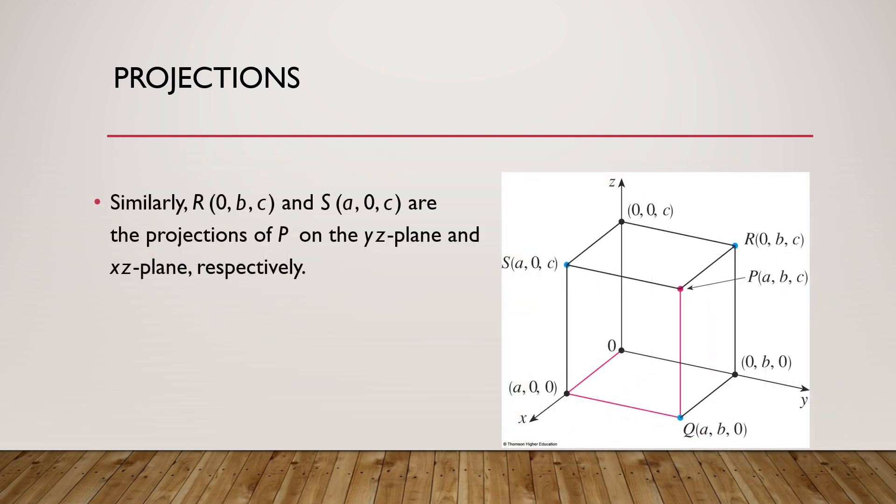We can draw the projection of point P on y-z plane, that is, the point R, where x-axis is 0, and y-axis is B, and z-axis is C. This is the projection of P along y-z axis. We can have the projection of P along x-z axis, that is, the point S, where the coordinates are A, 0, and C.